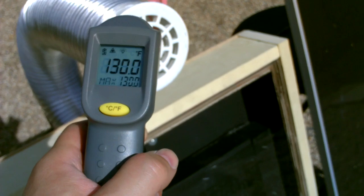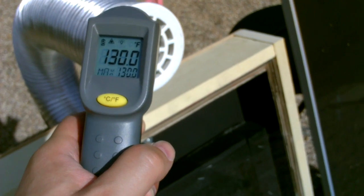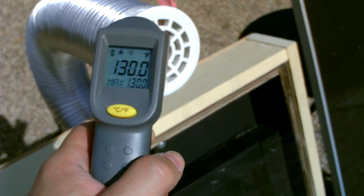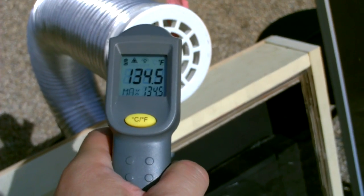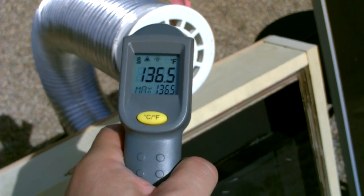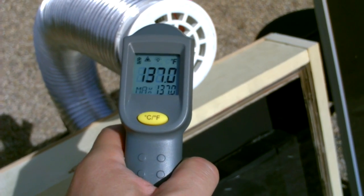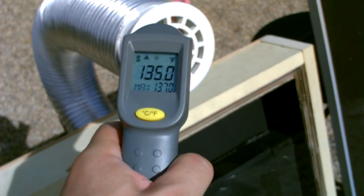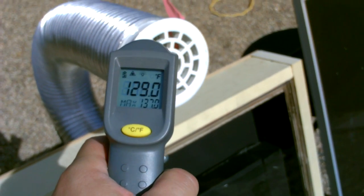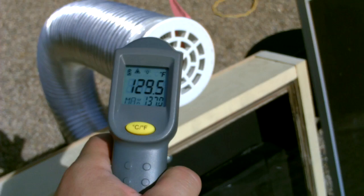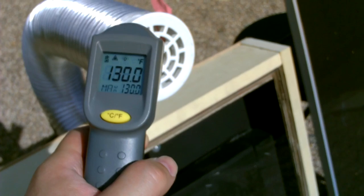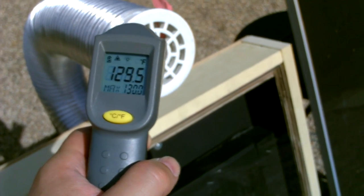So 130 degrees, we got some thin, high, thin clouds out there. If those go away we might get 135, 140. 134, 135 right now, 136, 137. The sun keeps going behind some thin clouds. Right now it's about 45 degrees out here, so this thing's working great.